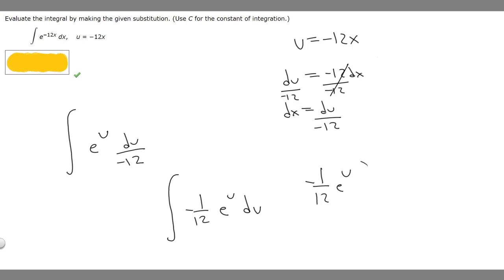And so we also have to add our constant. We're supposed to use c for the constant of integration. So it's minus 1 over 12 e to the u plus c.